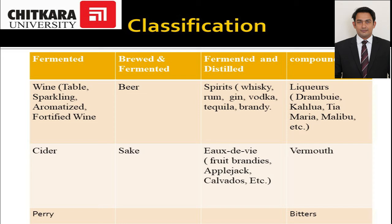The second category is brewed and fermented beverages, where brewing is added as an additional step alongside fermentation. Beer is one of the finest examples, and sake — a rice beer from Japan — is also a classic example. The third category is fermented and distilled beverages, which undergo fermentation first and then distillation. These are spirits, including whiskey, rum, gin, vodka, tequila, and brandy.